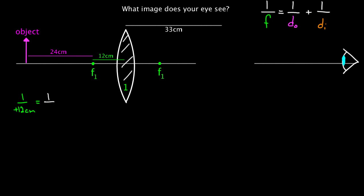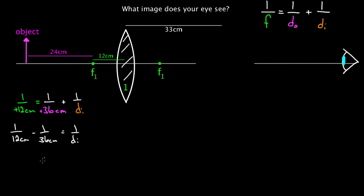So I'd have one over 36 centimeters — positive or negative? That's gonna be positive here. It's on the left-hand side, on the opposite side from my eye. It's gonna be positive 36. Plus one over the image distance — I'll label that DI. So now we just solve. You're gonna get one over 12 centimeters minus one over 36 centimeters equals one over DI. What you end up getting is one over 18 centimeters equals one over DI. If you solve that for DI, you get DI equals positive 18 centimeters.